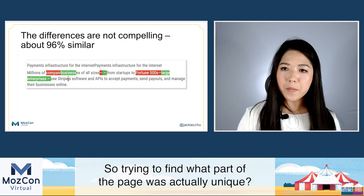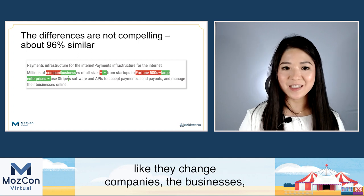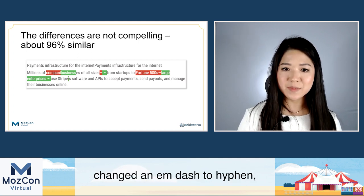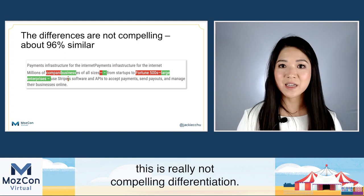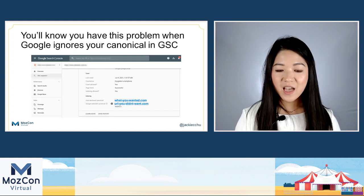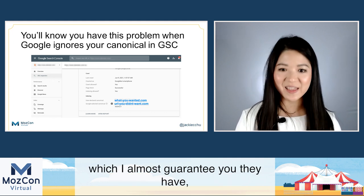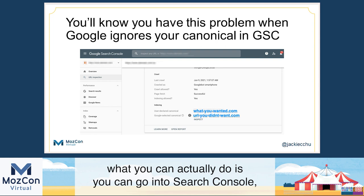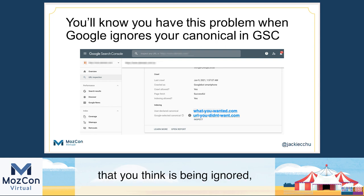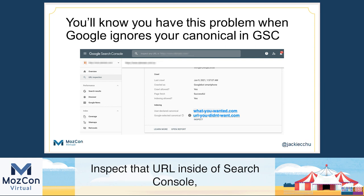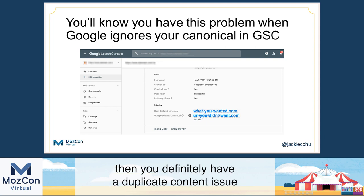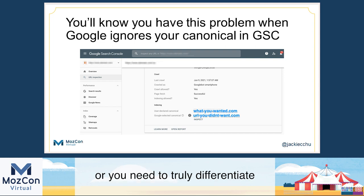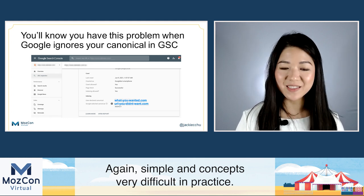Trying to find what part of the page is actually unique, you can see they've made really compelling changes like changing company names, changing an em dash to a hyphen — the reality is this is not compelling differentiation. If you run into a duplicate content problem, go into Search Console, look for the URL you think is being ignored, inspect that URL, and if the user-declared canonical is actually different from the Google-selected canonical, then you definitely have a duplicate content issue and you need to get rid of those duplicate pages or truly differentiate the content.